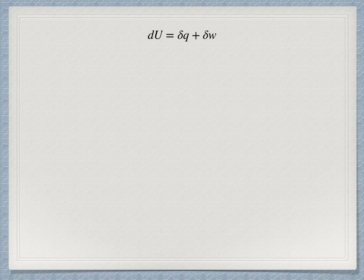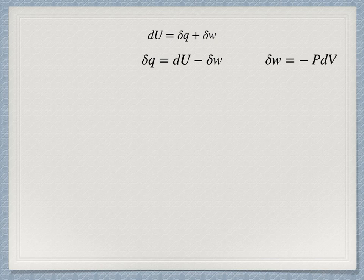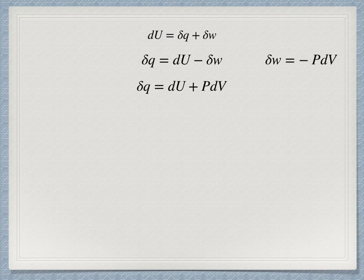Now here is the first law of thermodynamics written in differential form. The equations that follow are based on the first law, so they are universally applicable. We can rearrange it to solve for delta q. We know the definition of work is minus p delta V. So in a differential form that expression is delta w equals minus p dV. We can substitute for delta w to get dU plus p dV.